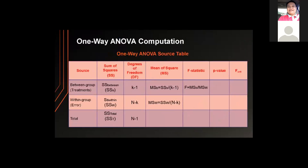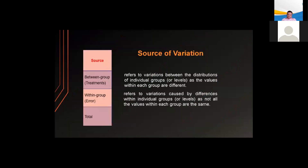The computation of ANOVA problems are usually summarized in a one-way ANOVA source table with headers: source, sum of squares, degrees of freedom, mean of square, F-statistic, p-value, and F-critical. The source refers to where variation comes from — between or within. The between-group, also called the treatment group, refers to variations between the distribution of individual groups. The within-group, sometimes called the error group, refers to variations caused by differences within individual groups.